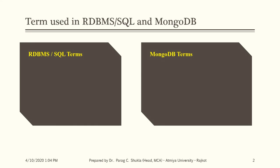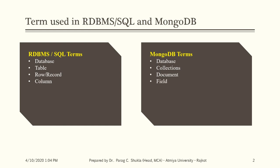First, understand the difference between SQL and MongoDB. The term 'database' is the same in both. In SQL, 'table' is the structured representation — in MongoDB it is called a 'collection'. In SQL, a row or record is called a 'document' in MongoDB. A column or field in SQL is also called a 'field' in MongoDB. Joining multiple tables in SQL corresponds to '$lookup' or an embedded document in MongoDB.